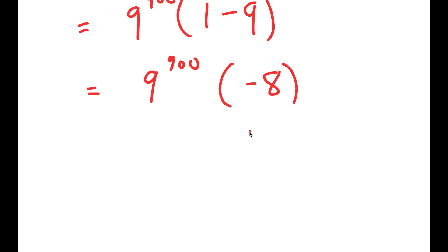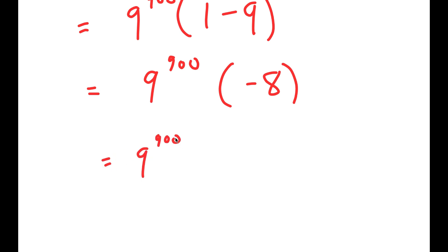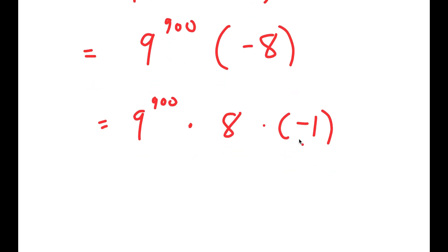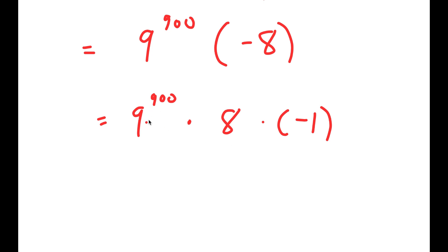From here, what I want to do is move this negative sign to the front. Another way of doing this is rewriting it as 9 to the power of 900 times 8 times negative 1. Now I can multiply negative 1 with 9 to the power of 900, so I get negative 9 to the power of 900 times 8.